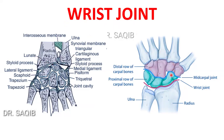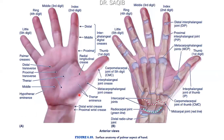First, you see these are the eight carpal bones, and this is the radius and the ulna bones of the forearm. The wrist joint is formed between the radius and the lateral three bones of the proximal row of the carpal bones. The proximal wrist crease is the demarcation point of the wrist joint. It is also known as the radiocarpal joint. The ulna doesn't take part in the formation of the wrist joint.